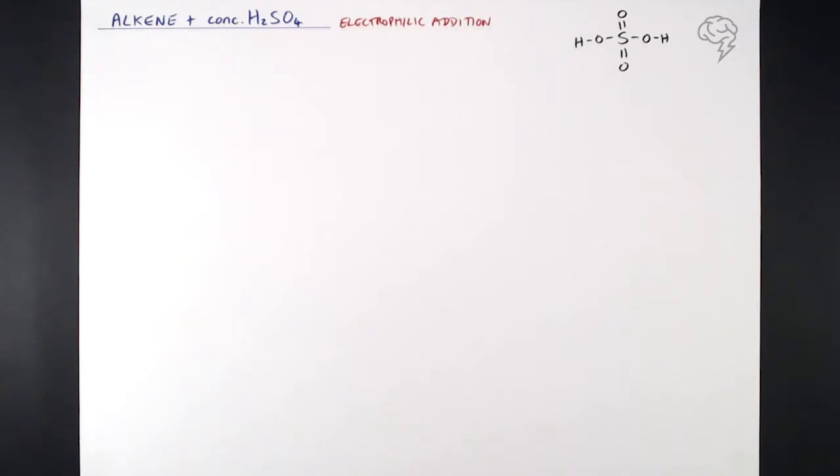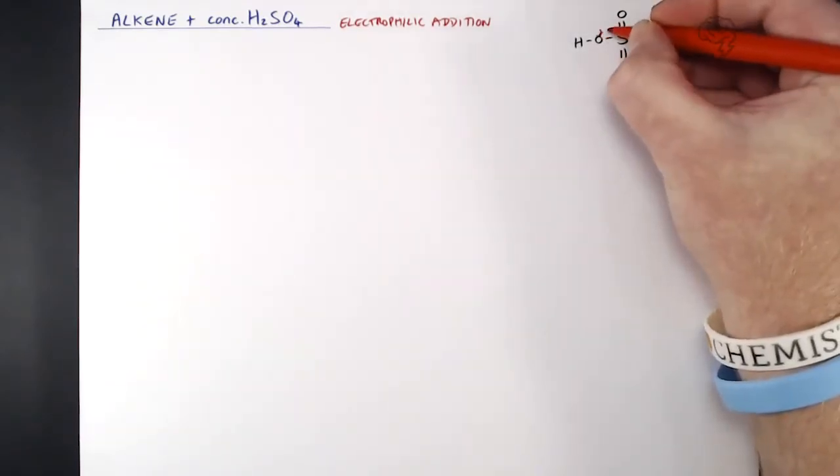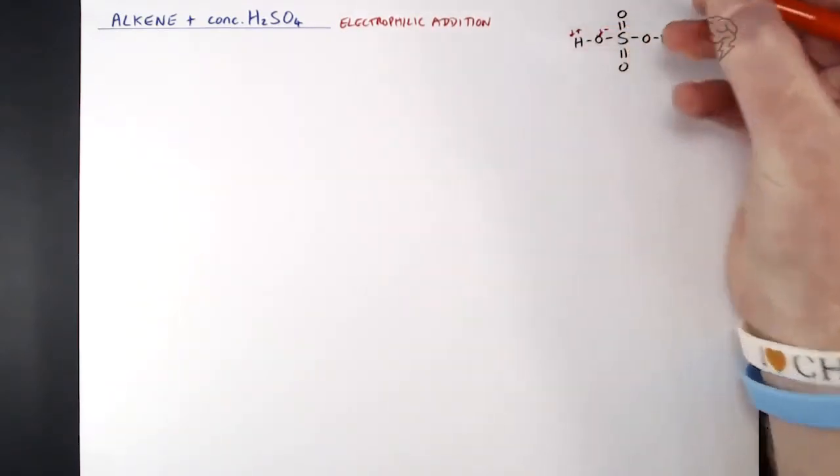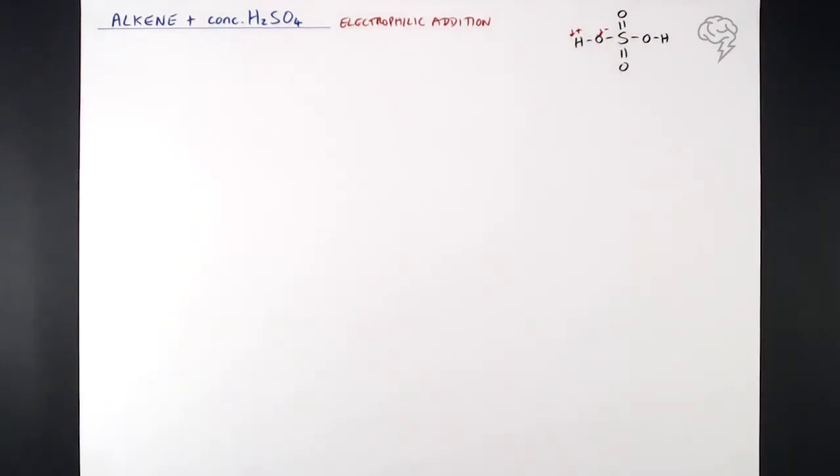So in this molecule, it's the O-H bond that actually has a dipole present on it. So the O is delta negative, the H is delta positive. That's going to be our electrophile in this process.